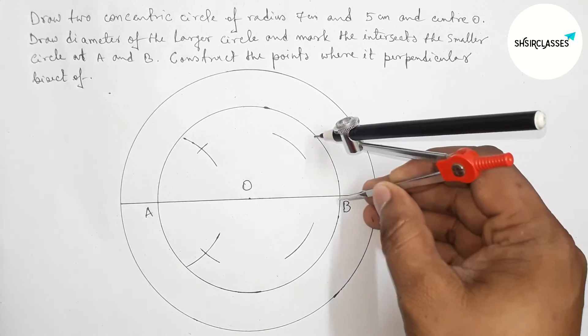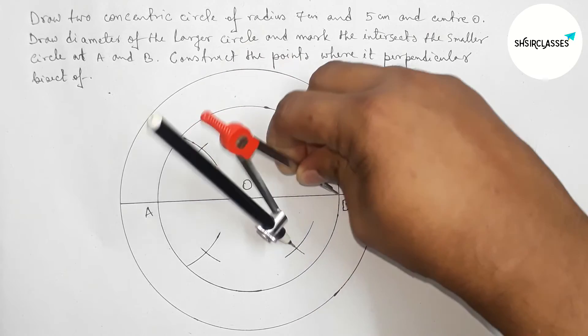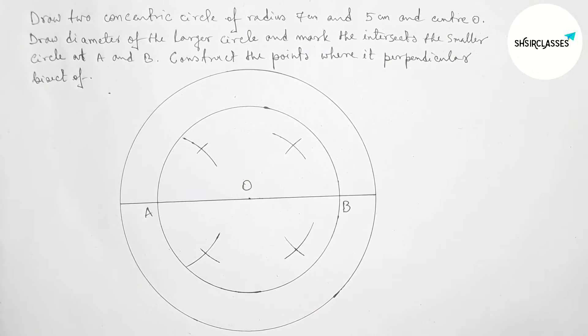Putting the compass on point B and taking greater than half of OB and cutting the arcs.